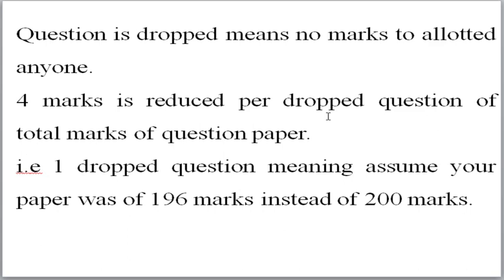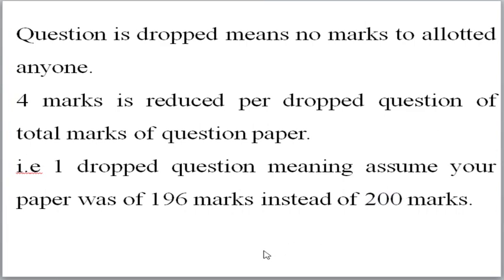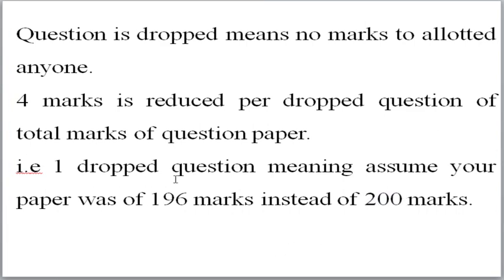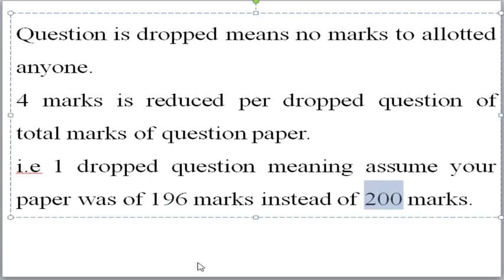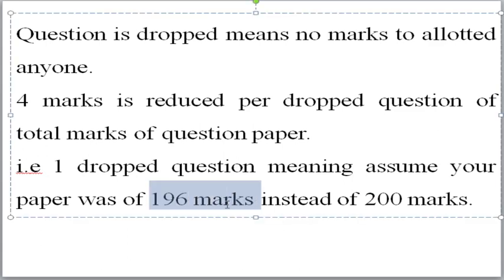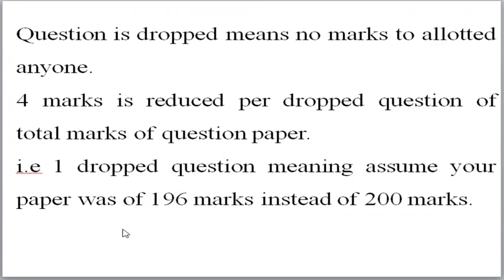Another point: 4 marks is reduced per dropped question from the total. With respect to the CSIR examination, the paper is for 200 marks. If one question is marked as dropped, the question paper itself will be considered for 196 marks instead of 200 marks. So if your Part C question or any 4-mark question is dropped, your paper will be evaluated out of 196 marks.